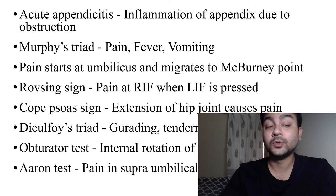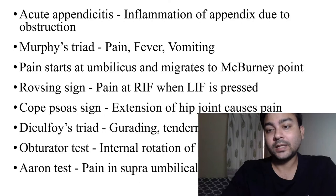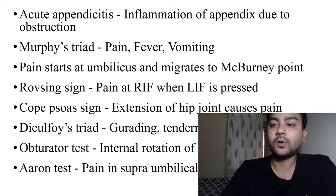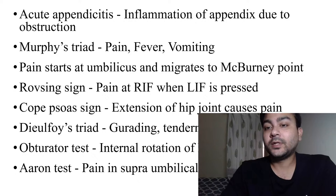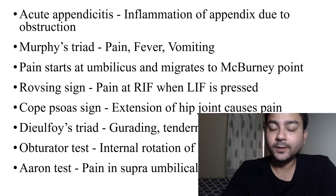There are many signs of appendicitis you should know. Remember the names — direct MCQs can be asked like 'Rovsing sign is seen in which condition?' Rovsing sign is pain at the right iliac fossa when the left iliac fossa is pressed or deeply palpated.